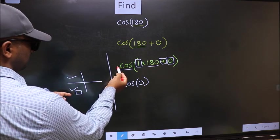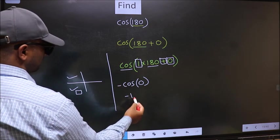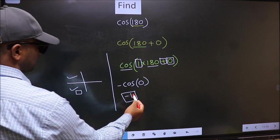And in the third quadrant, cos is negative. So we should put negative. Negative cos 0 equals negative 1. This is our answer.